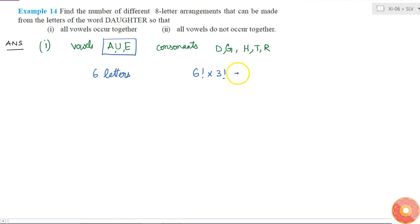This is equal to 720 times 6, because 6 factorial is 720 and 3 factorial is 6. So this will be equal to 4320. This is the total number of different 8 letter arrangements I can make that satisfy this condition.